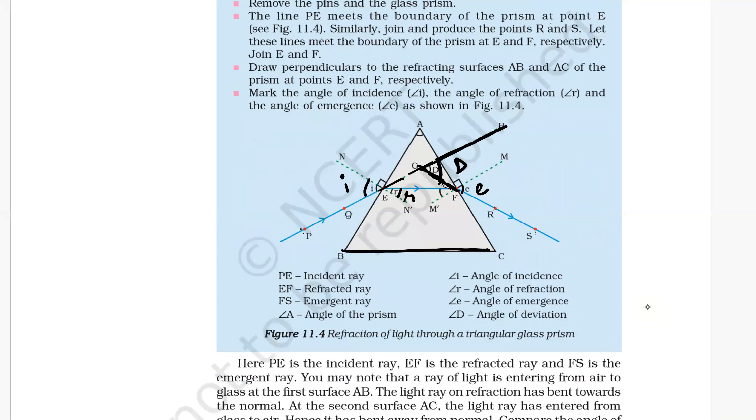PE is the incident ray, EF is the refracted ray, and FS is the emergent ray. Angle i is the angle of incidence, r is the angle of refraction, e is the angle of emergence, and d is the angle of deviation.